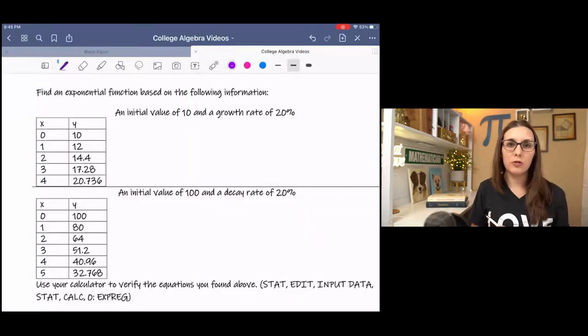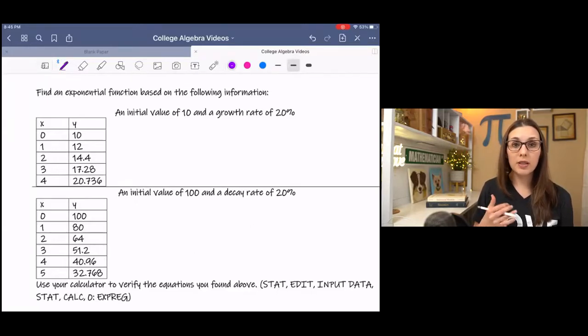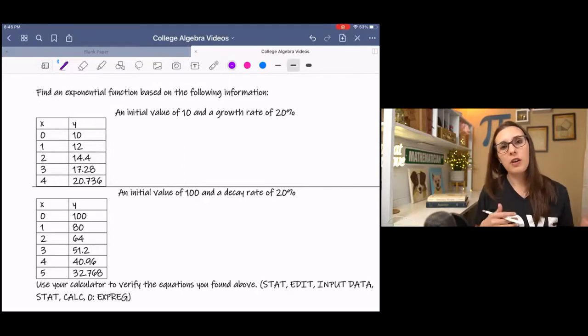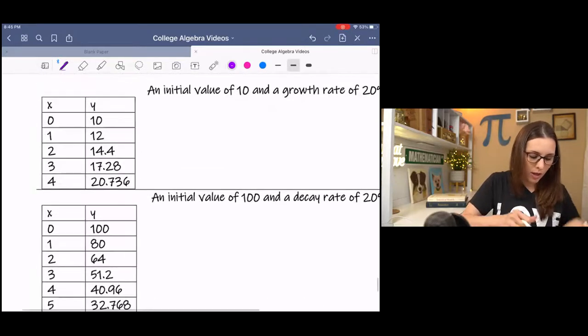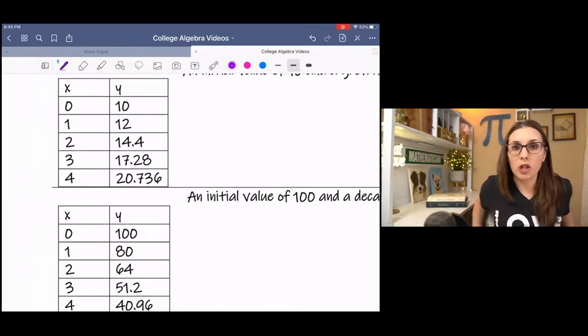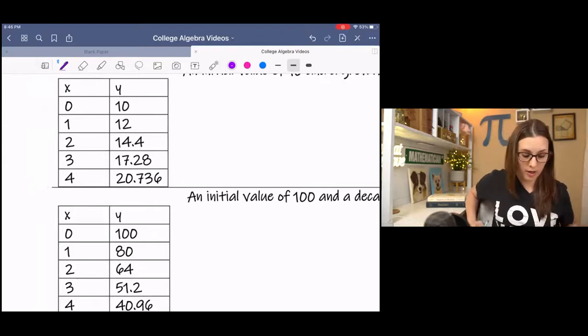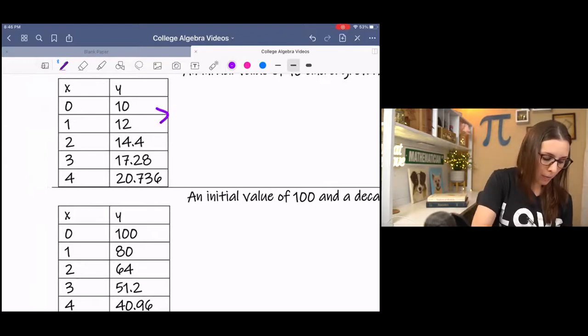I have a table of values for the next example, and we're going to be writing an equation based on the table of values. Now, the sentence at the top of the example actually tells you the information that you need to write your equation, but I included the table of values to hopefully show you how it relates. If I look at the change factor for the y coordinates, I am multiplying by 1.2 every time.